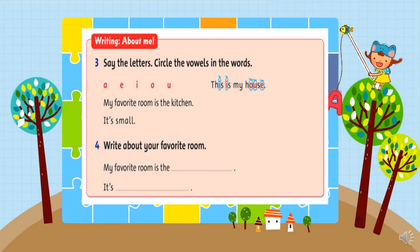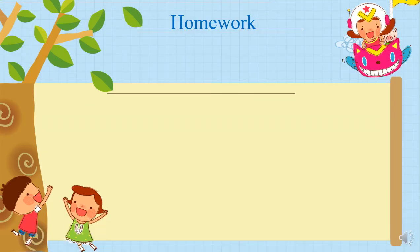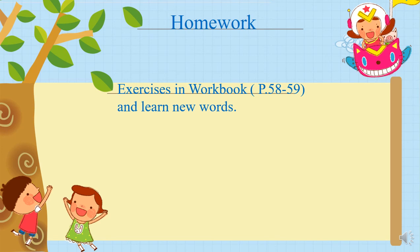And now we move to the next skill — that's writing. About me. Now we will say the letters. Circle the vowels in the words. I will help you with the sentence: 'It's small.' I will circle I and A. So you will do the sentence: 'My favorite room is the kitchen.' And do part four — write about your favorite room. And don't forget, do the exercises in the book, pages 58 to 59, and learn new words.